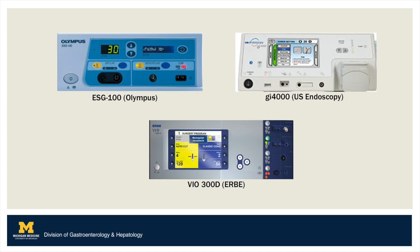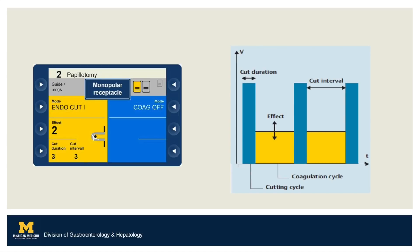For the sake of specificity, we will briefly review settings on the ERBE VIO 300D, which is a generator we carry in our units. On the left we show a representative example of a screen on the ERBE generator, here showing settings for a papillotomy. Endocut I is the name for the blended cut used with straight wire devices like a sphincterotome. Settings available to adjust include effect, duration, and interval.